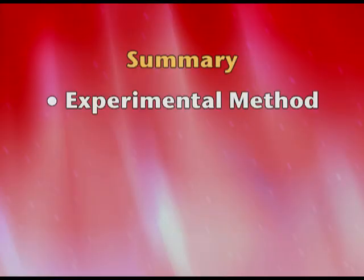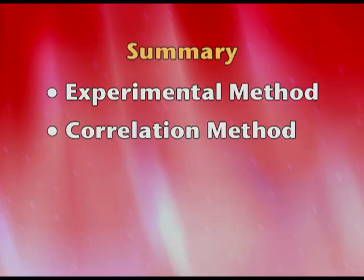Let us summarize. We talked about the experimental method — what experiments are, cause and effect, the variables IV, DV, and extraneous variable, and the five kinds of control methods for extraneous variables. We covered advantages and disadvantages, types of experiments, and then moved on to the correlation method and its basic relation with the experimental method. That is about it for today. Thank you.